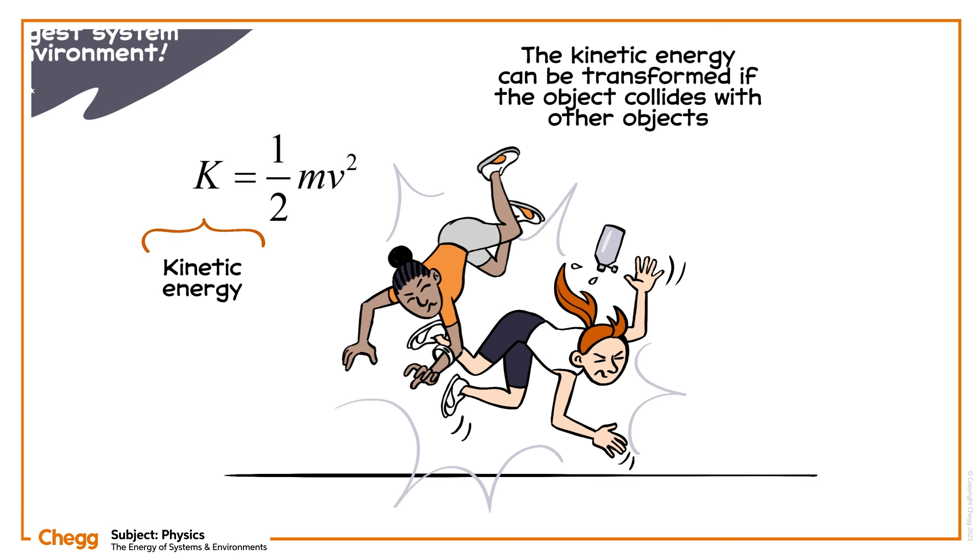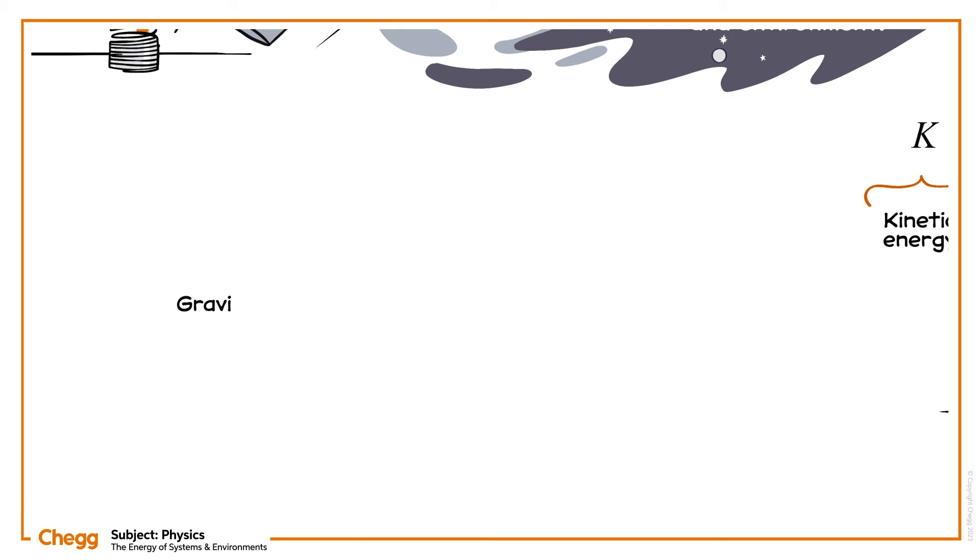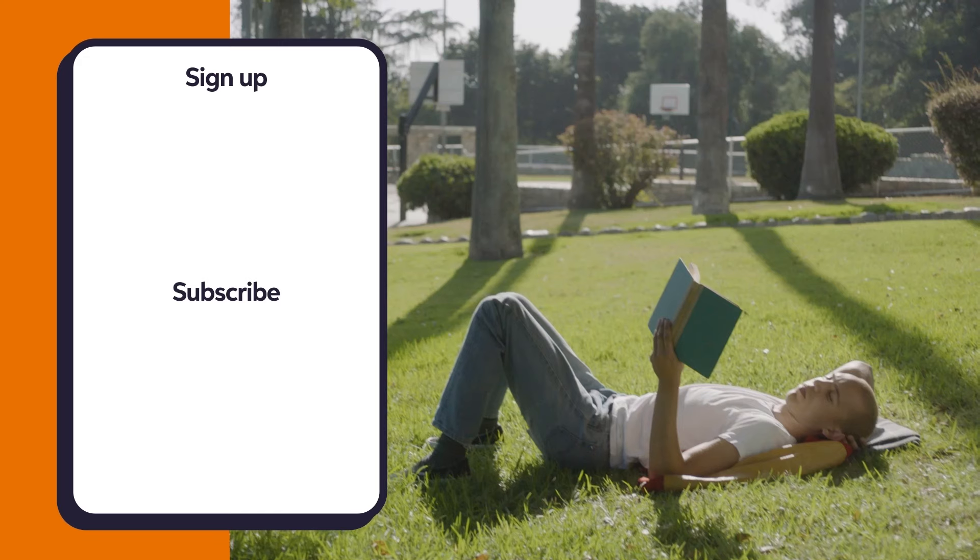Contrary to kinetic energy, potential energy is energy that an object possesses by virtue of its position within something. Gravitational potential energy, for example, is the energy associated with an…